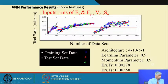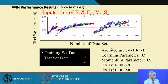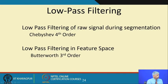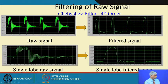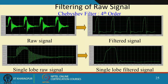The tool wear for different data sets — training data set and test data set — showed a good amount of correlation between training and testing. For low-pass filtering we used a Chebyshev fourth-order filter, and in the feature space we used a Butterworth third-order filter. This is the output: the raw signal, then the filtered signal, with lots of high frequency effects removed.